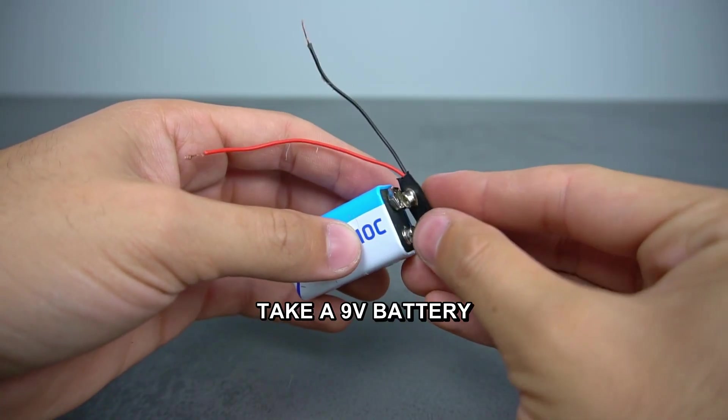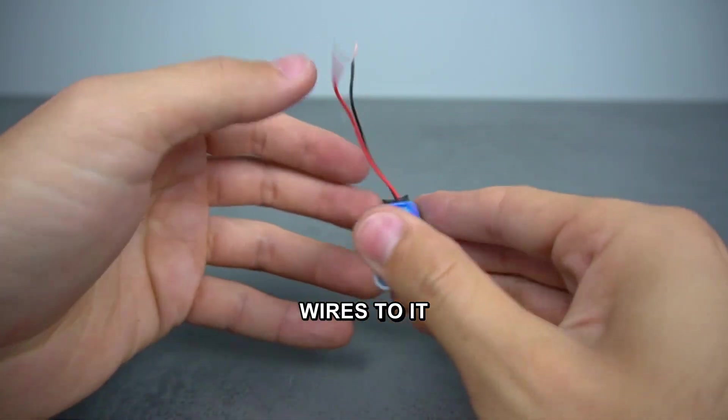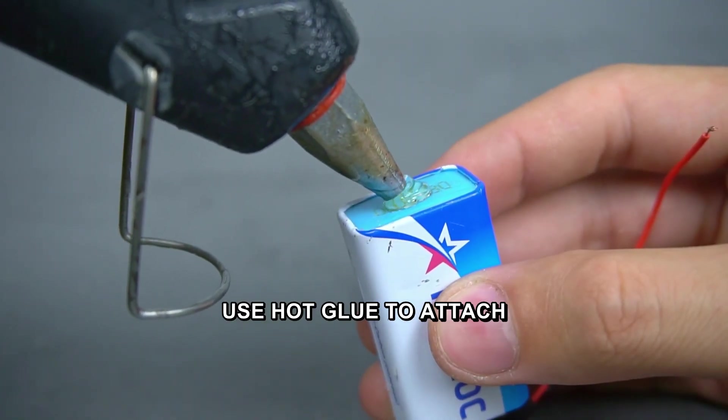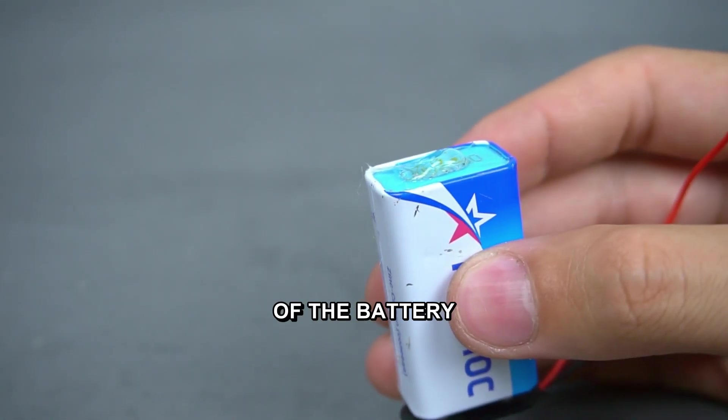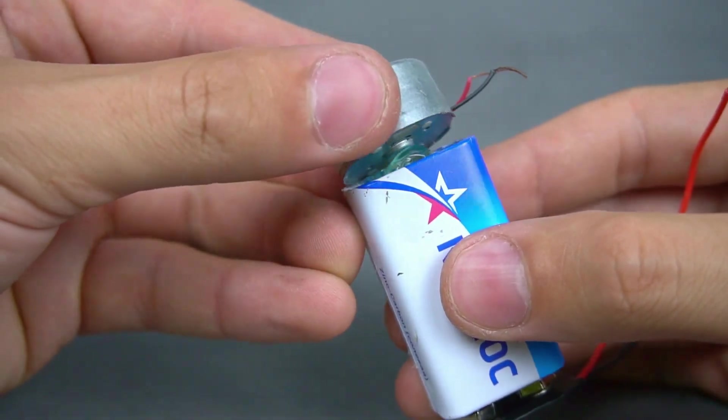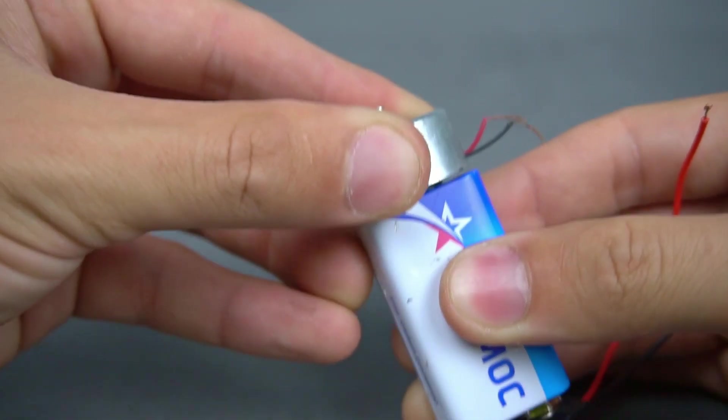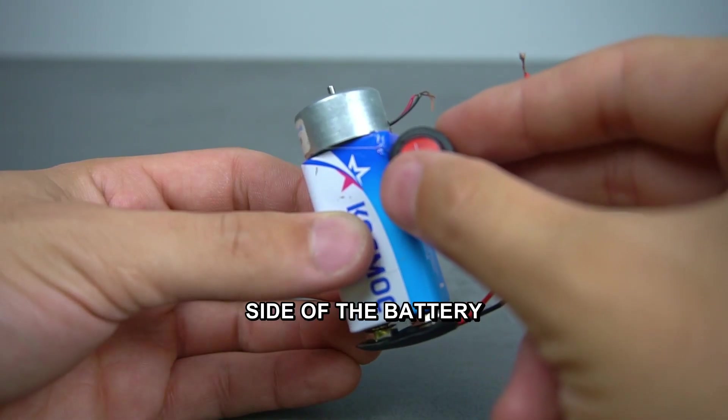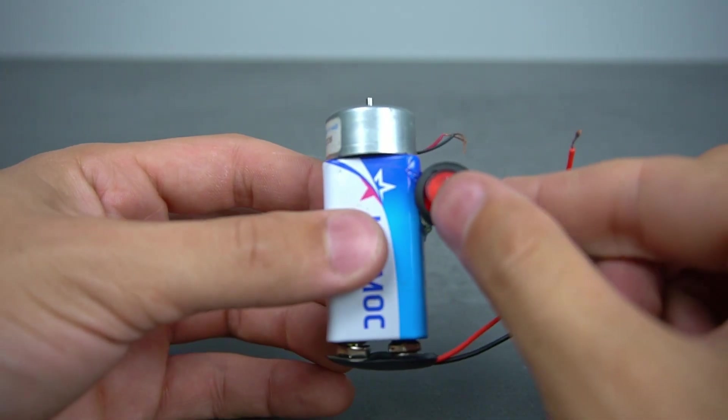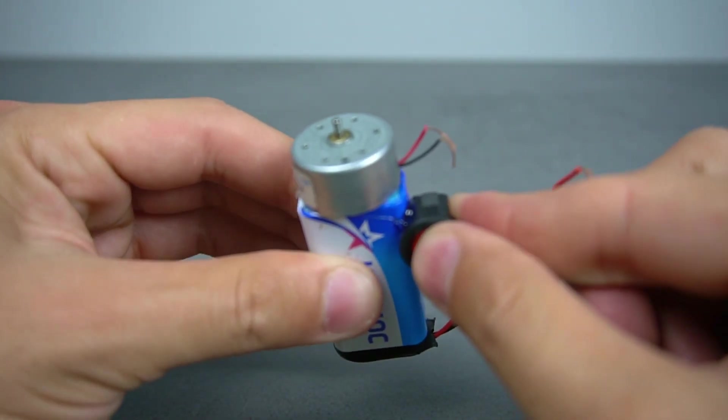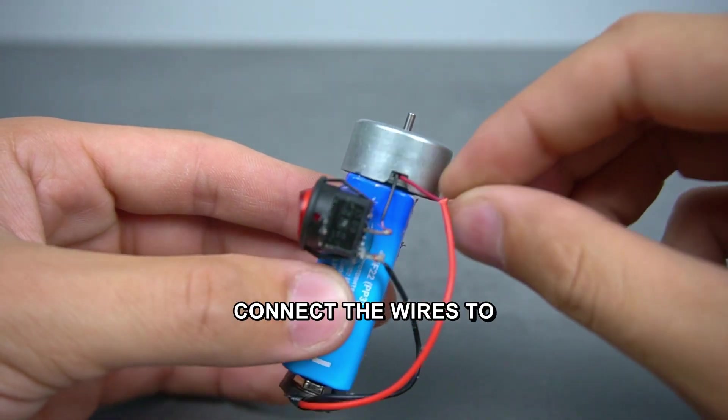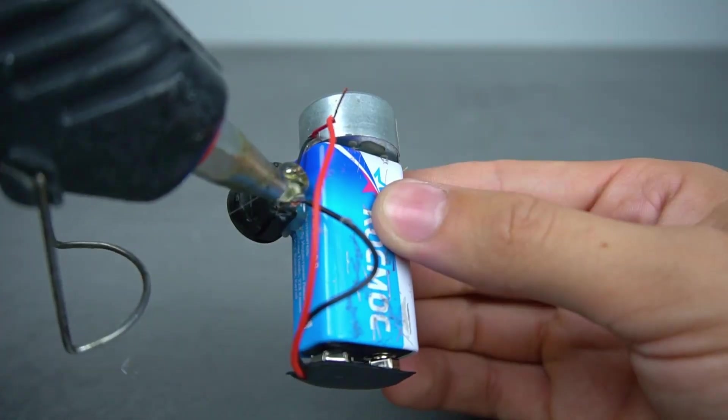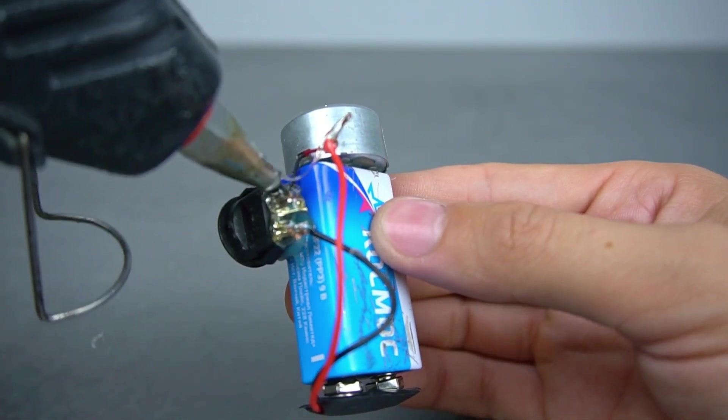Take a 9 volt battery and connect a connector with wires to it. Use hot glue to attach a small electric motor to the bottom of the battery. Glue the switch to the side of the battery. Connect the wires to the electric motor. Secure all connections with hot glue.